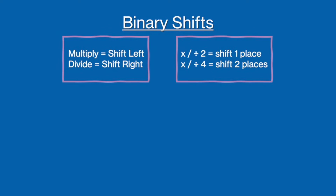Binary shifts follow a simple pattern. If you are multiplying a binary number, shift to the left, but if you're dividing, then shift to the right. Once you know the direction you are moving your binary value in, you just need to know how much to move it by. The amount you shift depends on how much you're multiplying or dividing by. If you're multiplying or dividing by two, then you will shift one place. If you're multiplying or dividing by four, then you will shift two places. You might be able to see a pattern here: the amount you multiply or divide a number by is two to the power of the amount of places you shift the binary number.